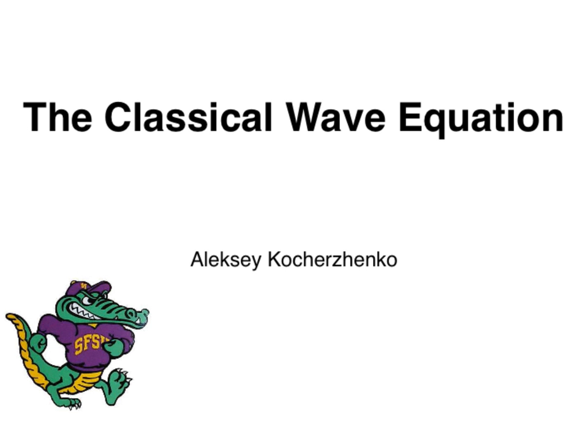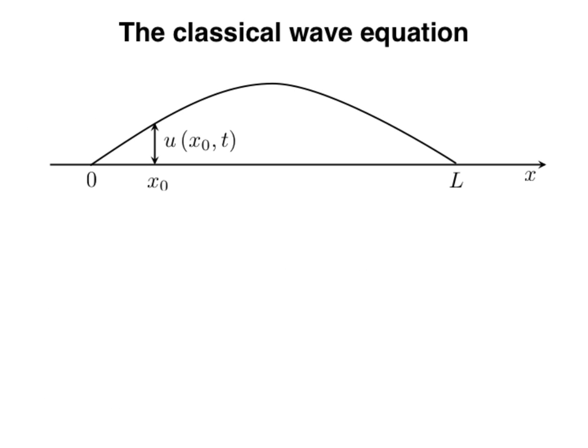Let's say that we have a string, for instance a guitar string. The string is of length L, stretched along the x-axis and fixed at its ends at x equals zero and x equals L. Now we pluck the string, displacing it from equilibrium. The displacement of every point on the string is perpendicular to the x-axis. The magnitude of this displacement, which we will denote u, depends on the coordinate x and, since the string oscillates, it also depends on time t.